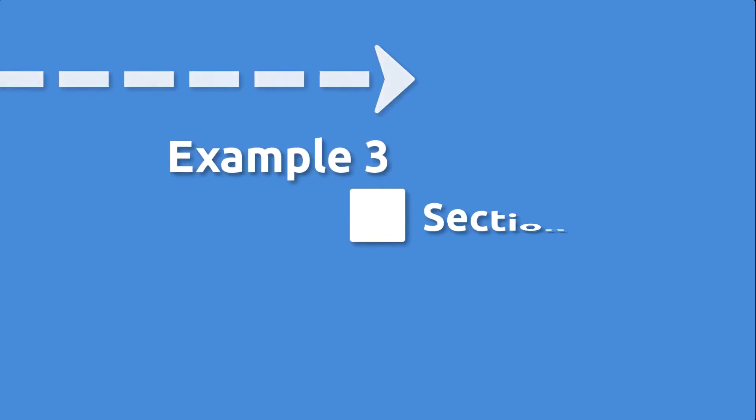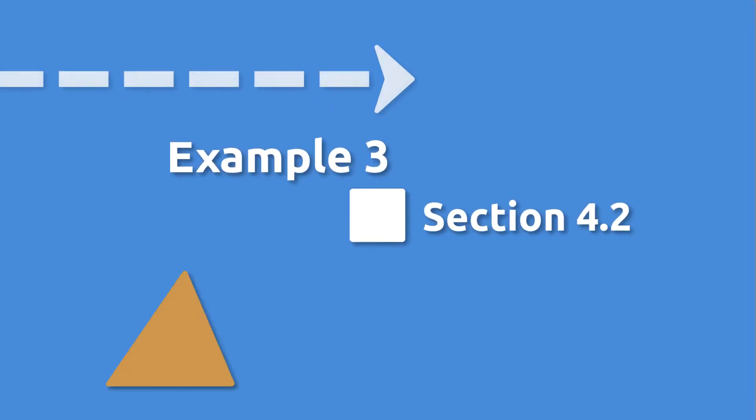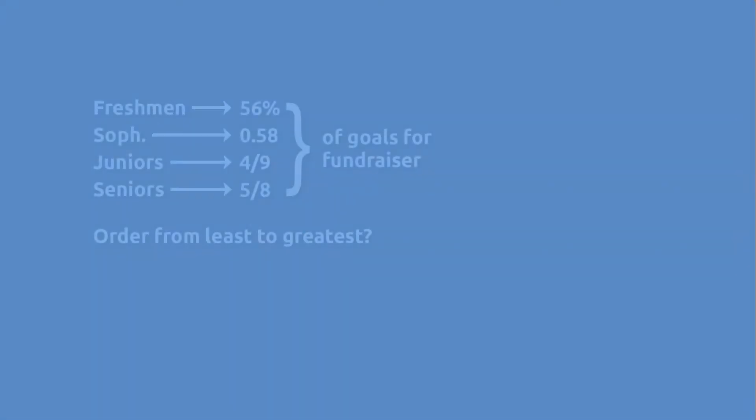Similar to previous examples, we're asked to order rational numbers. In this case, we're given that Leighton High School is holding a fundraiser.